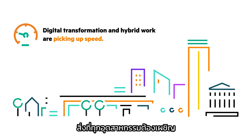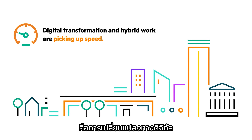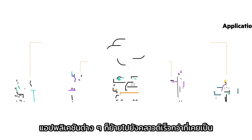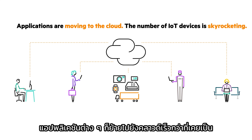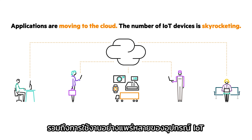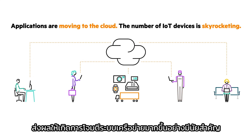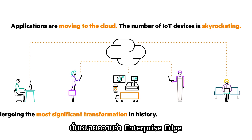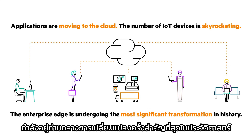Across every industry, digital transformation and hybrid work are picking up speed. Applications are moving to the cloud faster than ever, and the proliferation of IoT devices have significantly increased the attack surface. That means the enterprise edge is undergoing the most significant transformation in history.